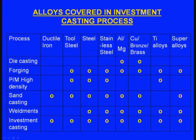Now let us come to the investment casting process. Ductile iron can be manufactured using investment casting, along with tool steels, steels, stainless steel, aluminum, magnesium alloys, copper, bronze, brass, titanium alloys and super alloys. Virtually all the alloys can be manufactured using investment casting process — that is the unique and greatest feature of the investment casting process.